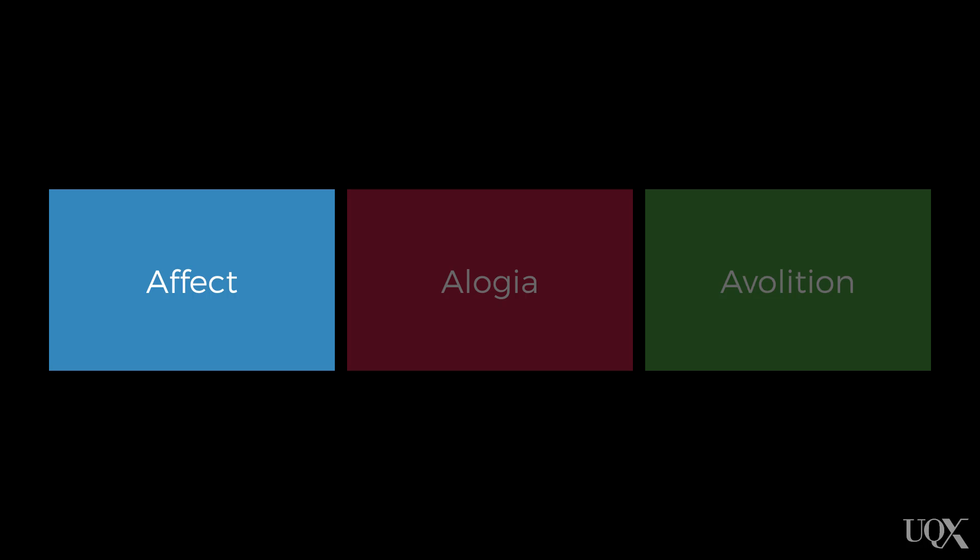Let's talk about affect first. There are a number of ways in which a person's affect or expression of emotion may be disturbed. One of the most common is what's referred to as flat affect, where the expression of emotion through tone of voice and facial expression is significantly reduced.